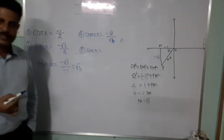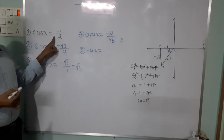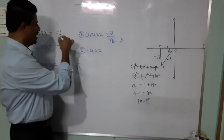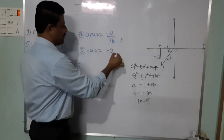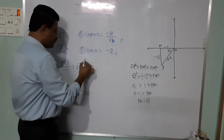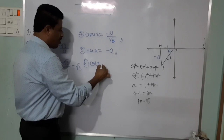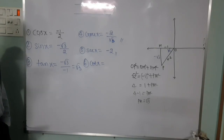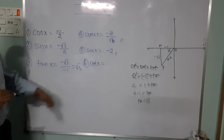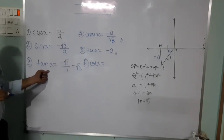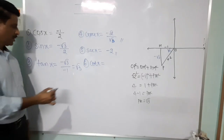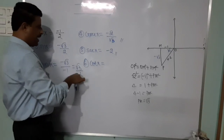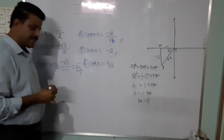Next, the fifth ratio: secant x. Secant x is the reciprocal of cos x, so secant x equals 2 by minus 1, which is minus 2. Then the sixth and last ratio: cot x. Cot x is the reciprocal of tan x. We know tan x equals root 3, and if there is no denominator it is considered 1, so cot x equals 1 by root 3.